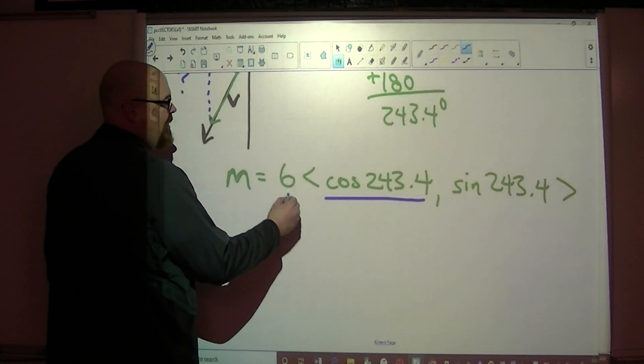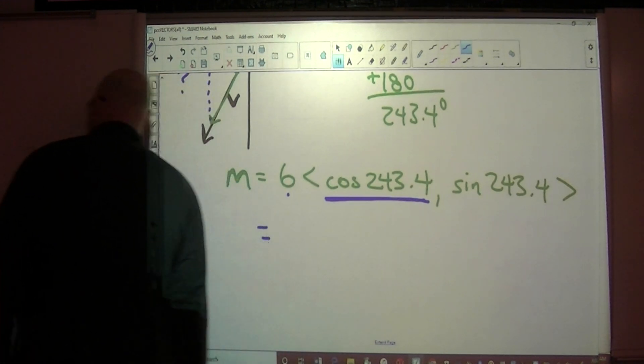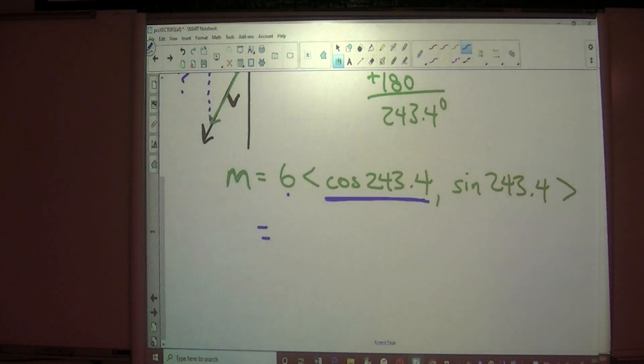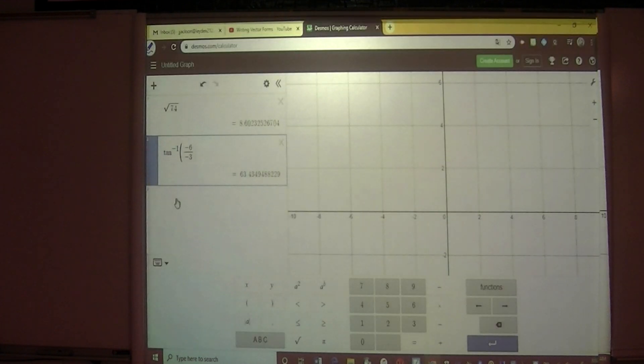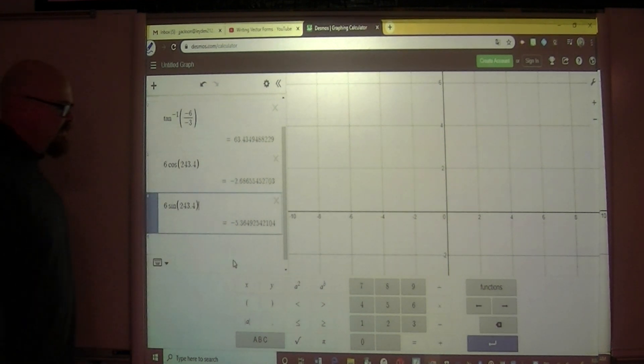All I have to do is multiply this number times this, and we can do that on Desmos as well. So we have 6 times the cosine of 243.4, negative 2.7, and then 6 times the sine of 243.4, negative 5.4. So negative 2.7, negative 5.4.